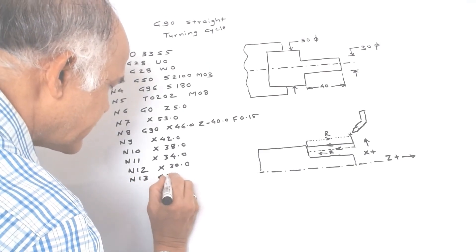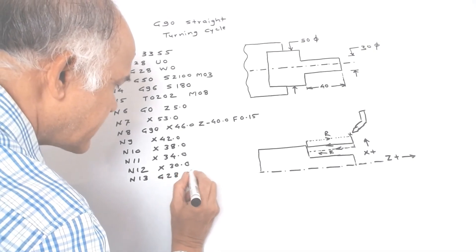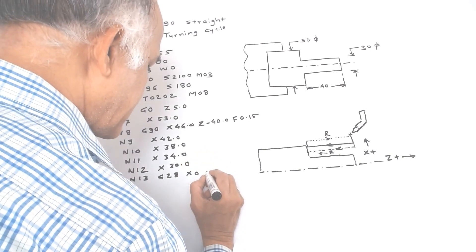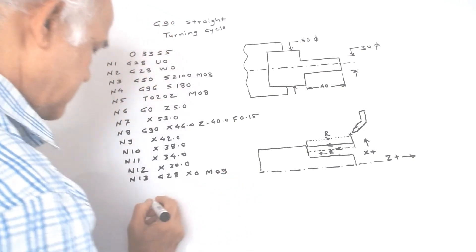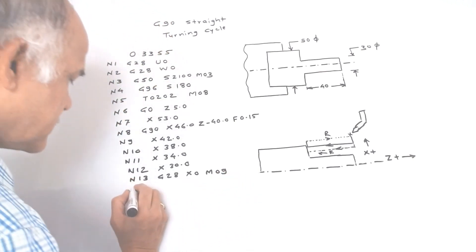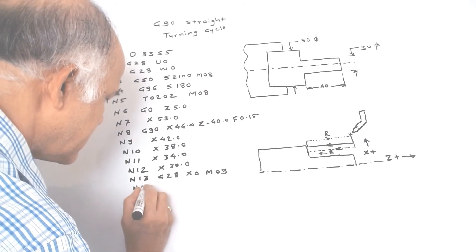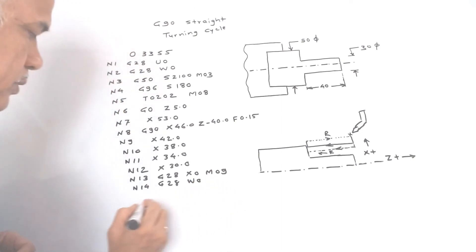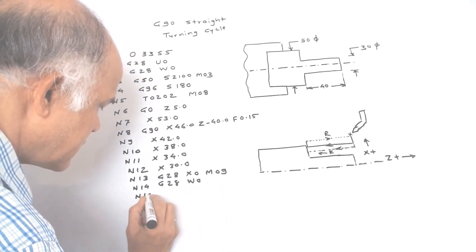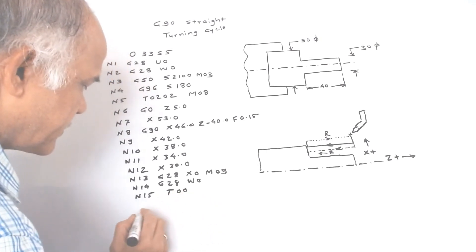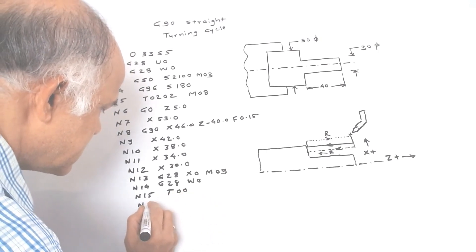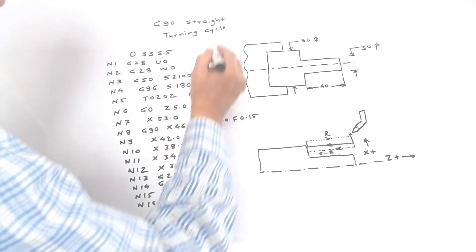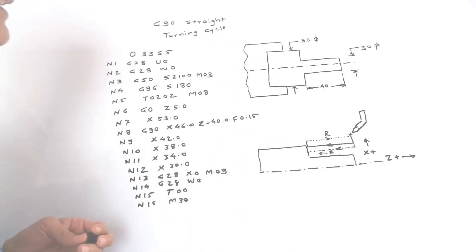G28 X0 — reference point for X axis — and coolant motor stop. Then M40, G28 W0 for the Z axis reference point. Tool offset deactivate, and the last block is program stop with rewinding — M30. This is the complete program for the G90 step turning cycle.